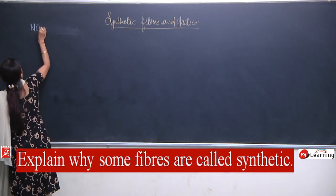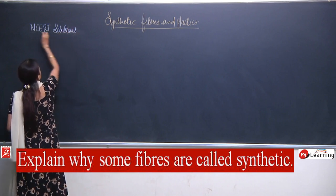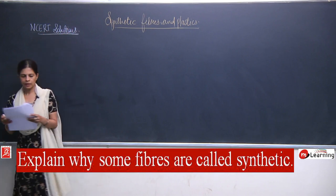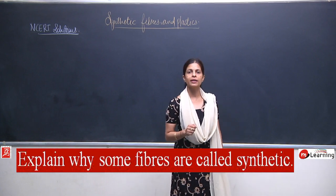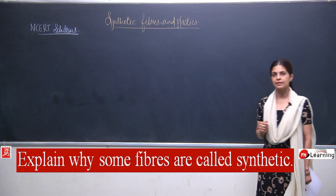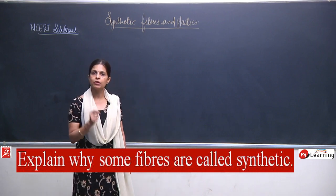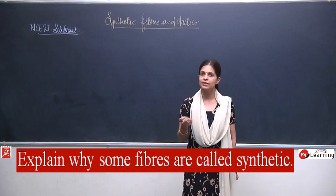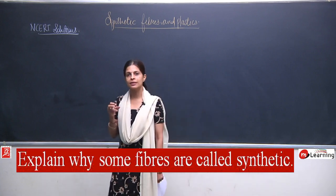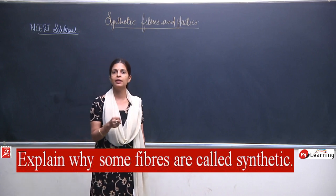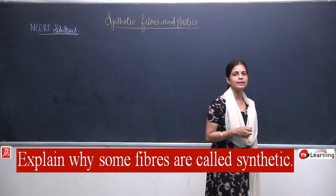The first question is: explain why some fibers are called synthetic. We know that fibers are of two kinds — the natural ones and the synthetic ones. When we talk about natural fibers like silk and wool, the raw material is taken from either plants or animals, and that is why these are known as natural resources.